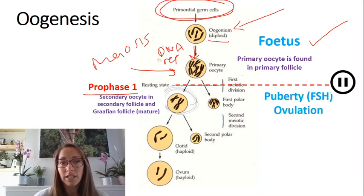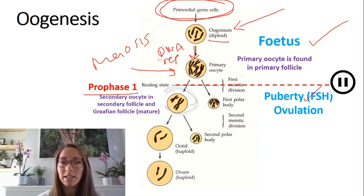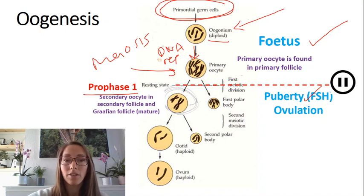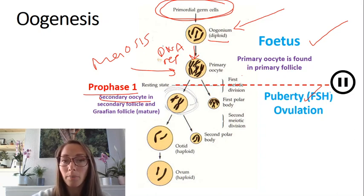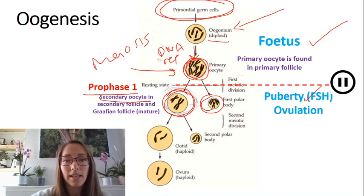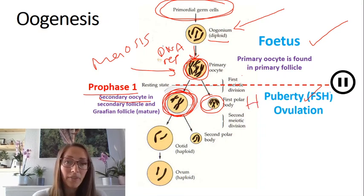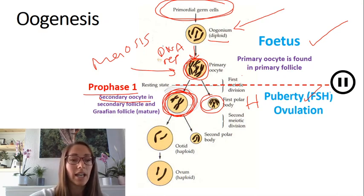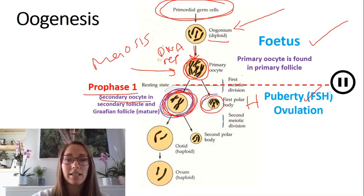When that individual reaches puberty, follicle-stimulating hormone is released — we'll discuss that more next week — and it stimulates the primary oocyte to continue its division to form a secondary oocyte. As we know from meiosis, meiosis 1 produces haploid cells. So the secondary oocytes produced here are haploid, compared to the diploid primary oocyte. One thing to also notice is that the cytoplasm was not evenly shared during that cell division — the cytoplasm in the secondary oocyte is much larger than in the polar body.